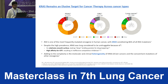As we know, KRAS is an elusive target for cancer therapy across all cancers. It is quite a common mutation — probably the most common oncogene — and amounts to around 86 percent of all RAS mutations.